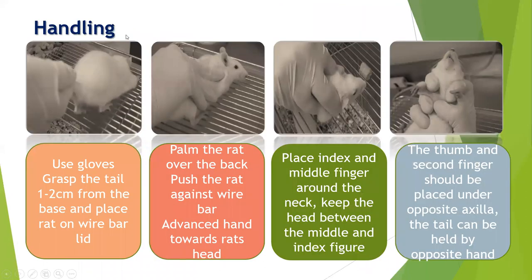Handling is a skill that requires practice. Handling should be carried out in such a way that it produces minimum or no stress in the animal. You should wear gloves. Grasp the tail one to two centimeters from the base and place the animal on the wire bar. Then palm the rat over the back, push the rat against the wire bar on the front side, advance your hand to the rat's head, and place the index and middle finger around the neck. Keep the head between the middle and index finger. The thumb and second finger should be placed under the opposite axilla, and the tail can be held by the opposite hand. Proper handling is required for drug administration, performing experiments, and withdrawing blood.